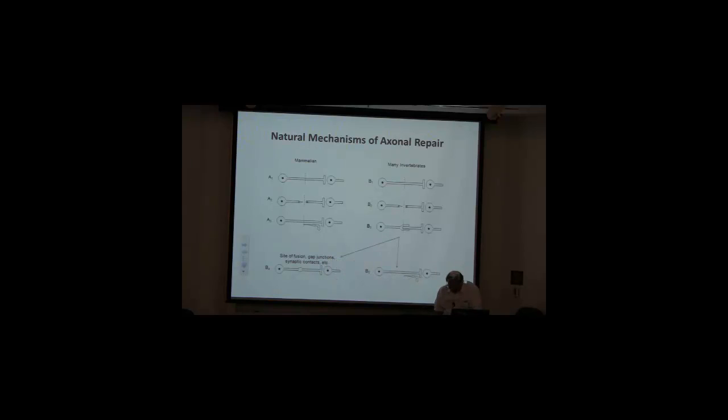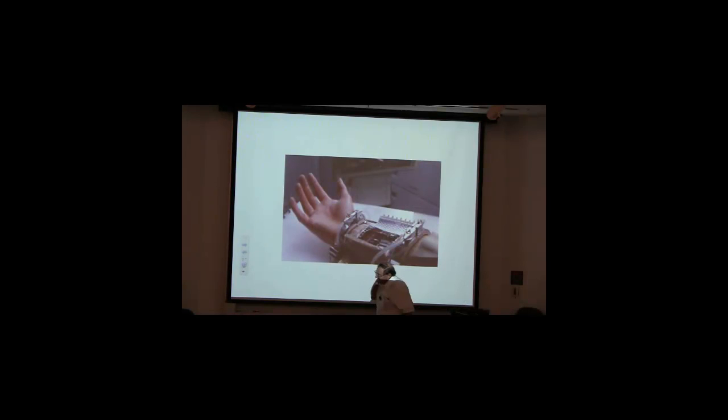So, from some point early on, we started thinking about how invertebrate regeneration mechanisms might somehow be used to improve regeneration in vertebrates, including mammals and humans. And there's been an awful lot of serendipity in all of this. Part of the serendipity was sometime in the mid-80s or so, while thinking about this, and having learned about a substance called polyethylene glycol, PEG, used by molecular biologists to make cell hybrids.